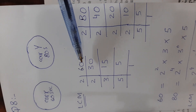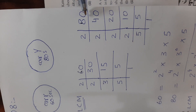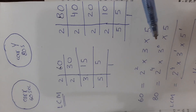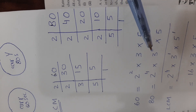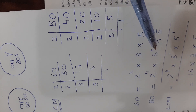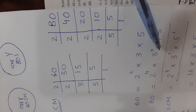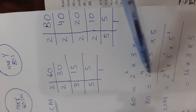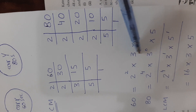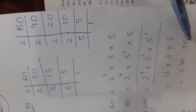Find LCM of 60 and 80 by prime factorization. Write down the factors of 60 and 80, entering 3⁰ for the missing factor of 3 in 80's factorization. For LCM, take out the maximum power from each column: 2⁴, 3¹, and 5¹. The LCM is 240 — the same answer as before.